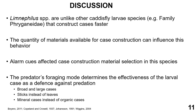We observed that alarm cues affected case material selection, with larvae adding more sticks to their cases when exposed to the alarm cue treatment compared to those in the control group. Studies have shown that the predator foraging mode determines the effectiveness of larvae cases as a defense against predation — larvae tend to build broader and larger cases, use sticks instead of leaves, or mineral cases instead of organic cases to make their case more resistant to crushing when attacked by predators. For this particular larvae species, the predator defense strategy appears to be the addition of more sticks to their cases.